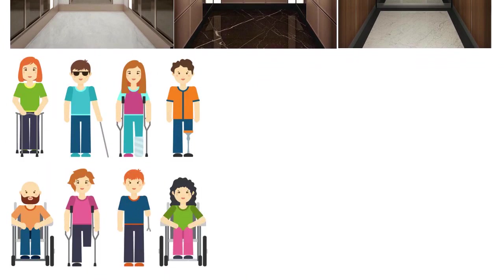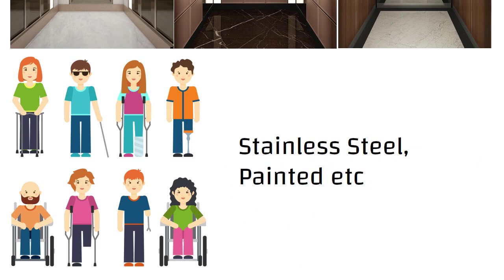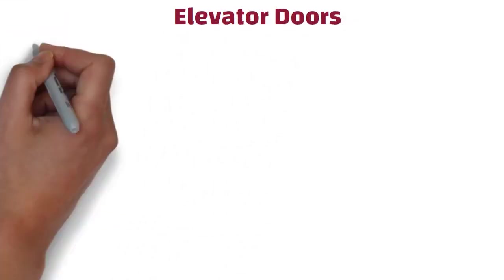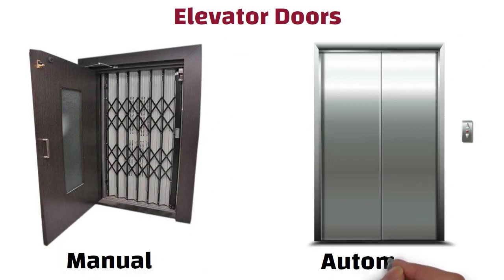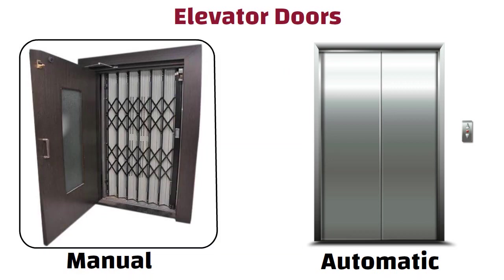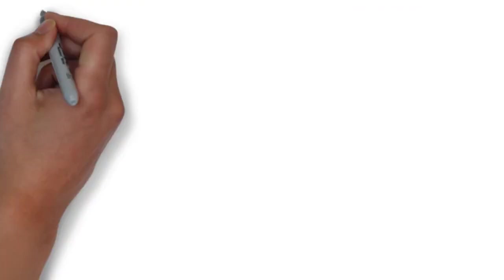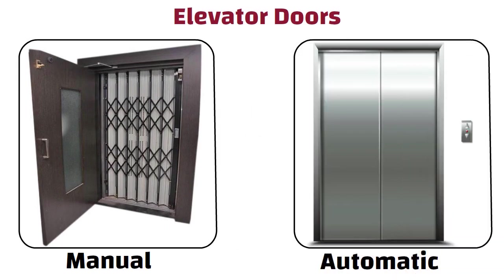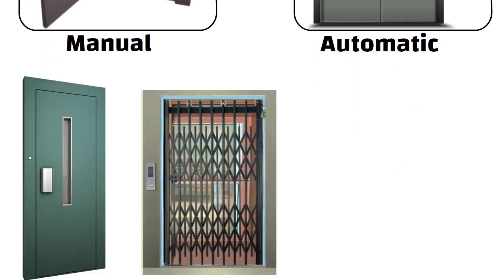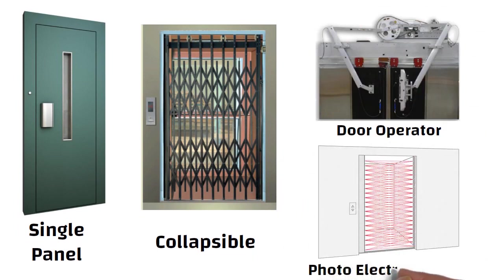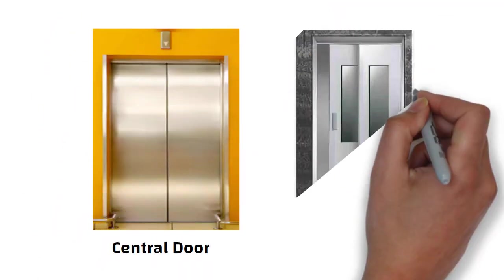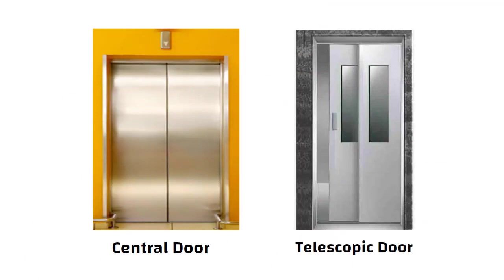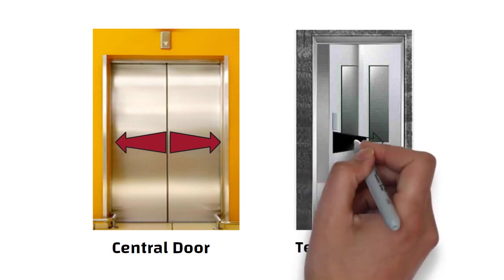Handrails come with different finishes like stainless steel styles or painted in a selected color upon client requirements. Elevator doors are of two types: manual doors and automatic doors. Manual doors are opened with the help of the person who wants to enter the lift; they can be a single panel or collapsible door that protects the car entrance. Automatic doors are automatically opened as they are powered by a door operator and usually have a full-height photoelectric curtain to sense the entry or exit of persons. Automatic doors are of two types: central door and telescopic door. In the case of a central door, during opening or closing, the panels move in opposite directions. Whereas in the case of a telescopic door, the panels move in the same direction.